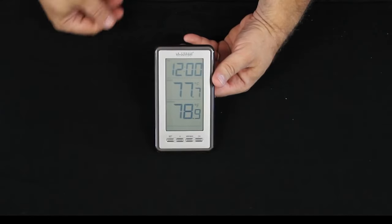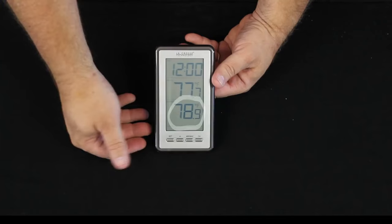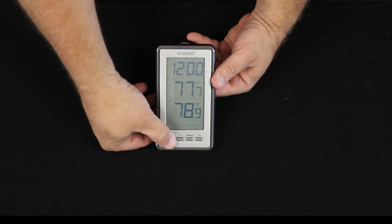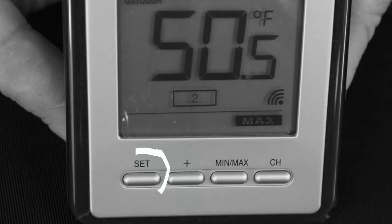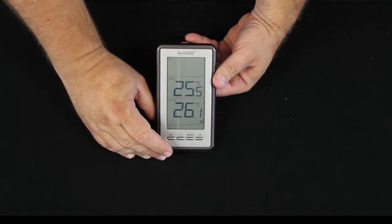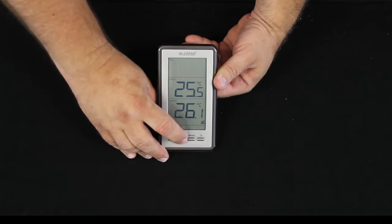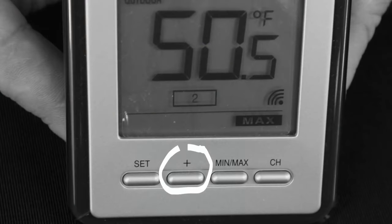Okay our weather station has picked up the outdoor temperature and now it's time for us to set the time. Simple operation: we press the set button and hold it. We'll see 12H begin to flash. We have an option of 12 hour time or 24H which is military or European time and we select that with the plus button. We're going to use 12 hour time.